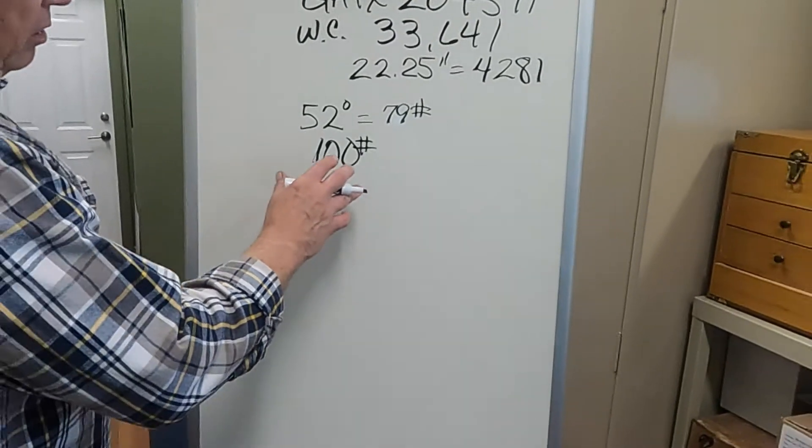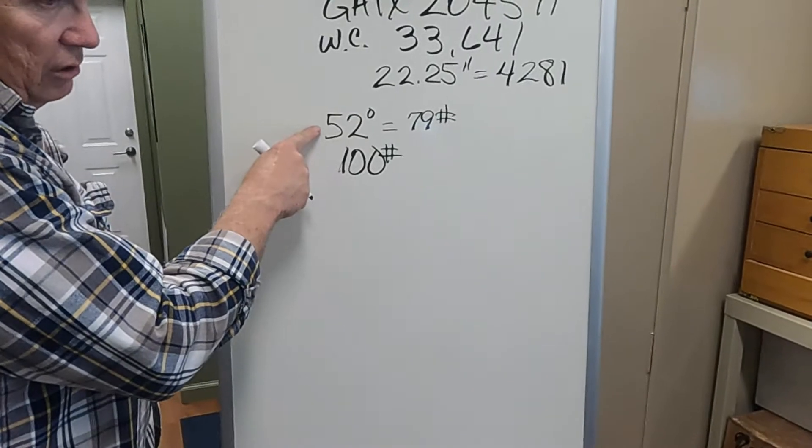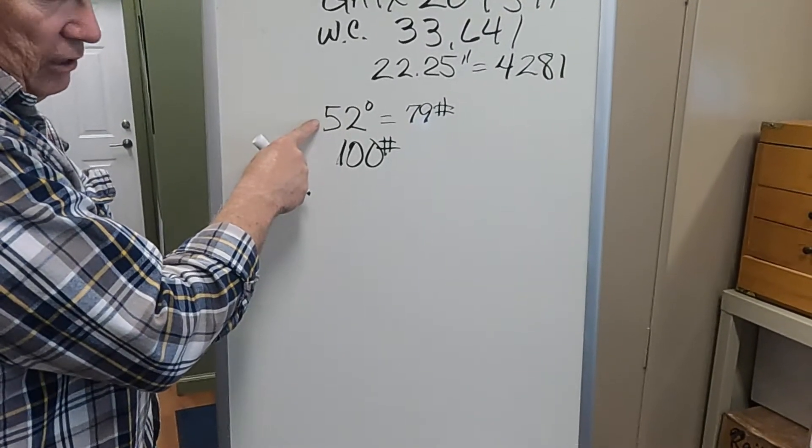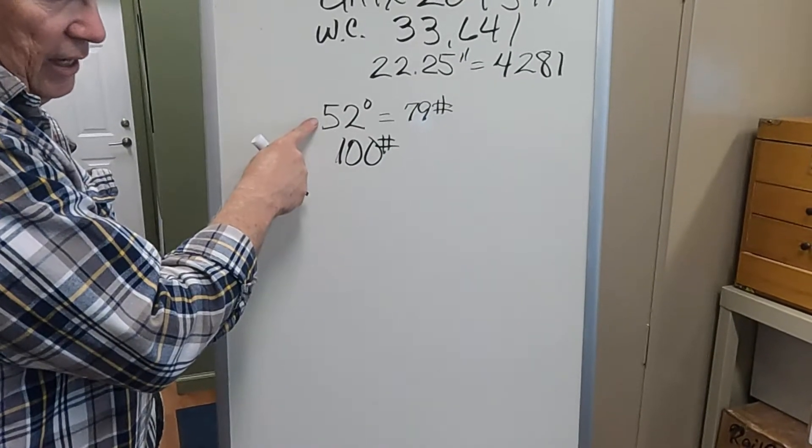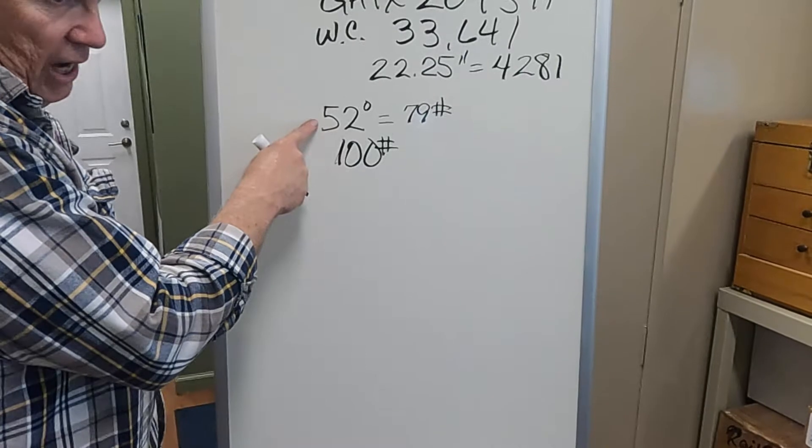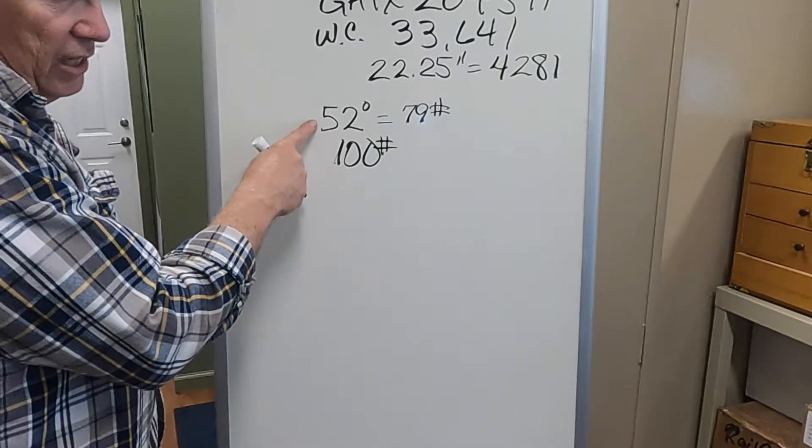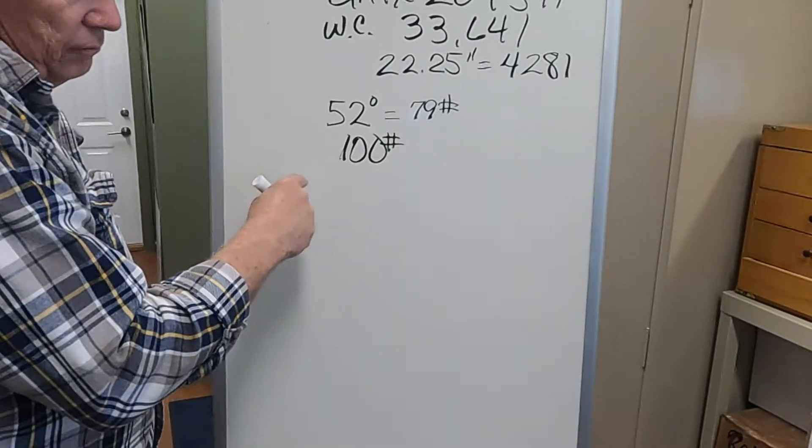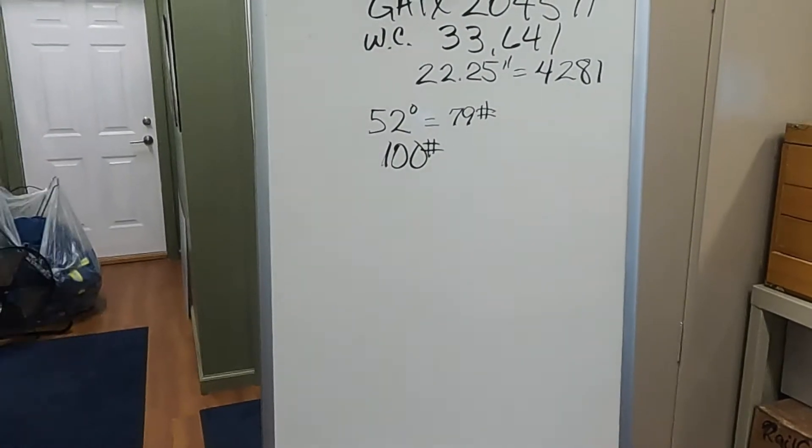Now that we have this, we have to figure a temperature correction for this. And there's a chart, NFPA 58, Annex F as in Frank. There's a chart, F.3.3. And there in that chart, hold on just a second, I'm going to go grab that chart and the book, and I'll show you the book.